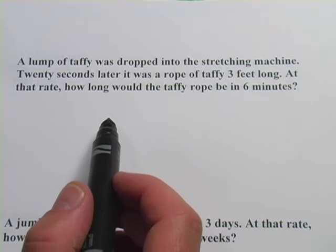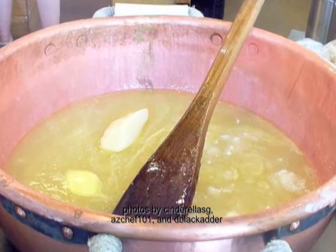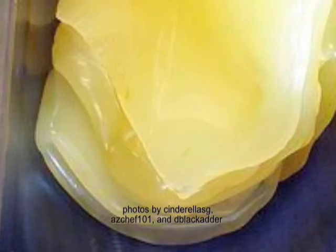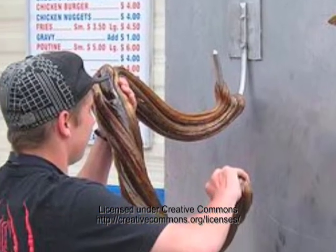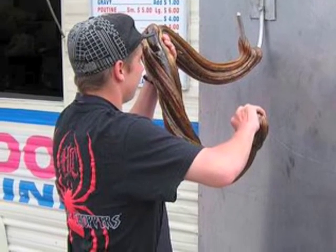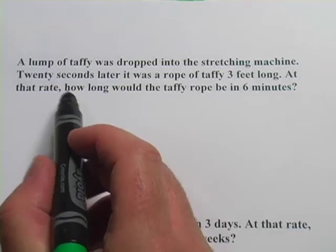a lump of taffy was dropped into the stretching machine. I don't know if you know how taffy is made, but they basically boil up a sugar syrup until it's pretty sticky, and then they stretch it and fold it and stretch it so that it gets air incorporated into it. That's the process of taffy making. It says,